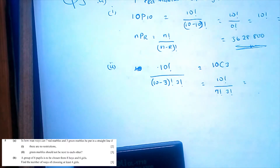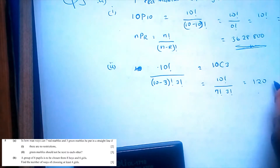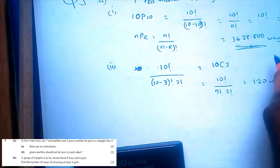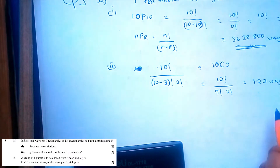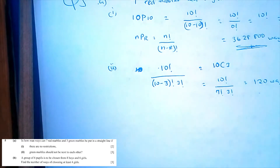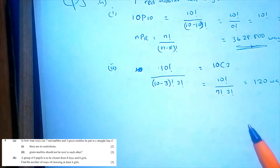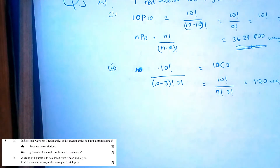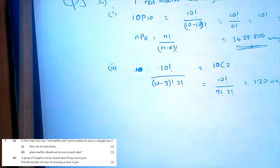So this is equal to 10 factorial divided by 7 factorial times 3 factorial, which equals 120. So 120 ways — these are the number of ways in which the marbles can be put in between the 7 red marbles without repeating the sequence.